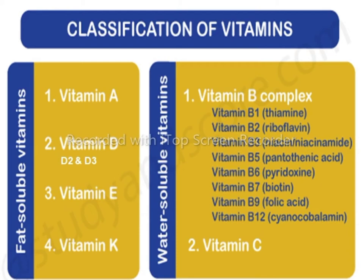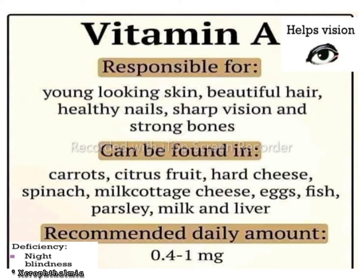Water-soluble vitamins include vitamin B complex and vitamin C. These vitamins are soluble in water and are easily destroyed by air, light, and cooking. They cannot be stored and are readily excreted from the body. Now let's discuss each vitamin in detail.